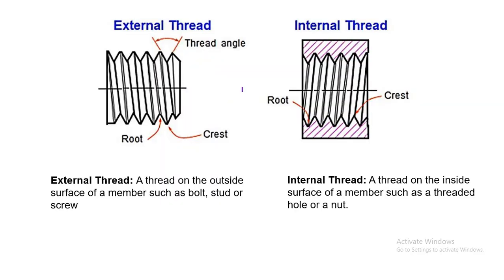External thread is a thread on the outside surface of a member such as a bolt, stud, or screw — the thread is cut on the outside surface of a cylinder. Internal thread is found in a nut — a thread on the inside surface of a member such as a threaded hole or nut. In many machines, holes are provided and the thread is cut inside the hole so that a screw can be attached.